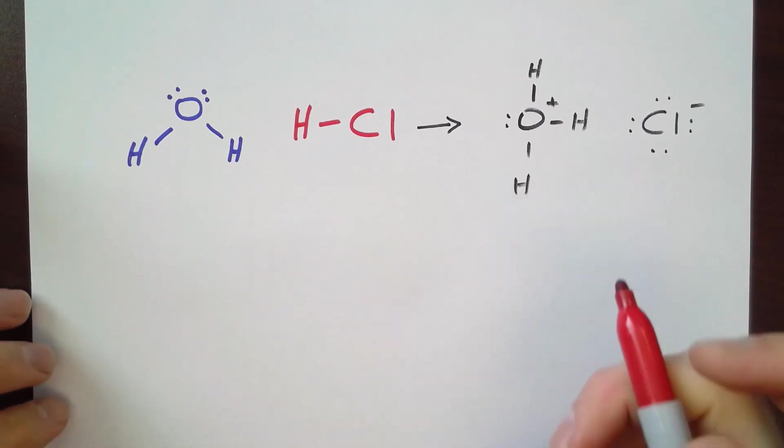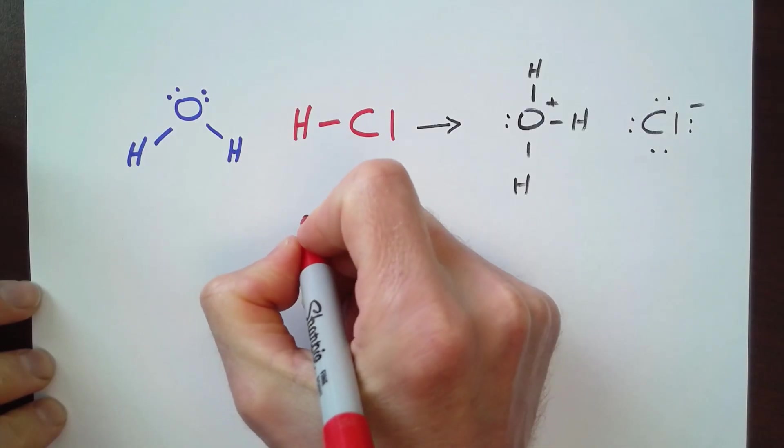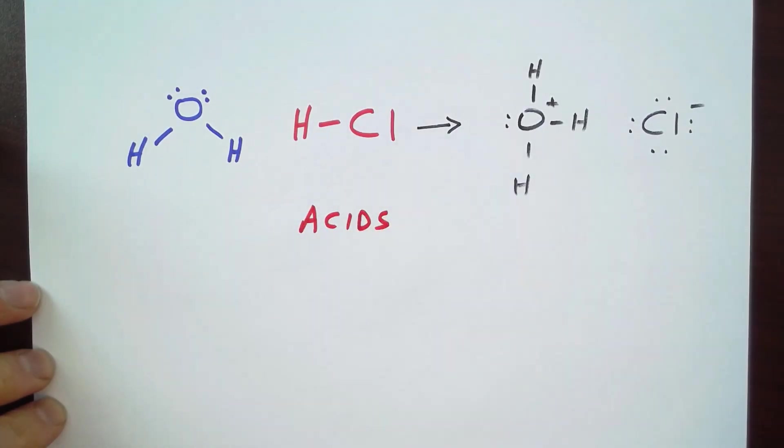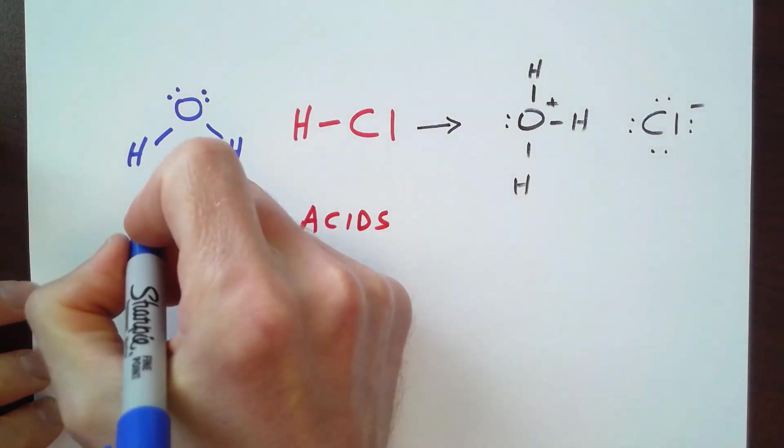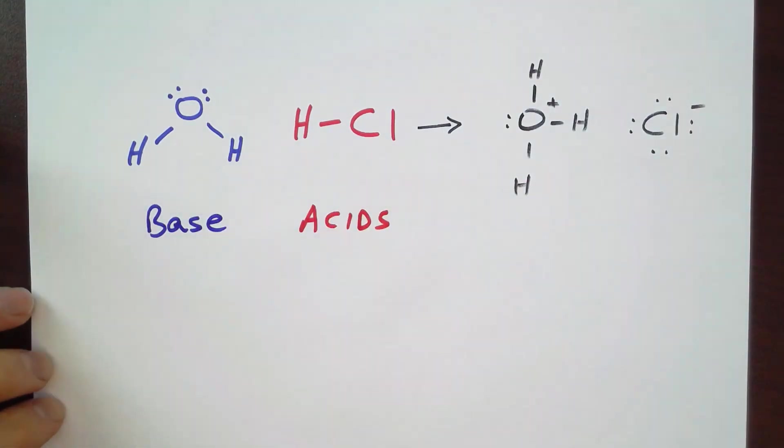As we've discussed in lecture, we can classify things as acids and bases, and we know that acids are proton donors and bases are proton acceptors. So in this reaction between water and hydrochloric acid, HCl is the acid and water is the base.